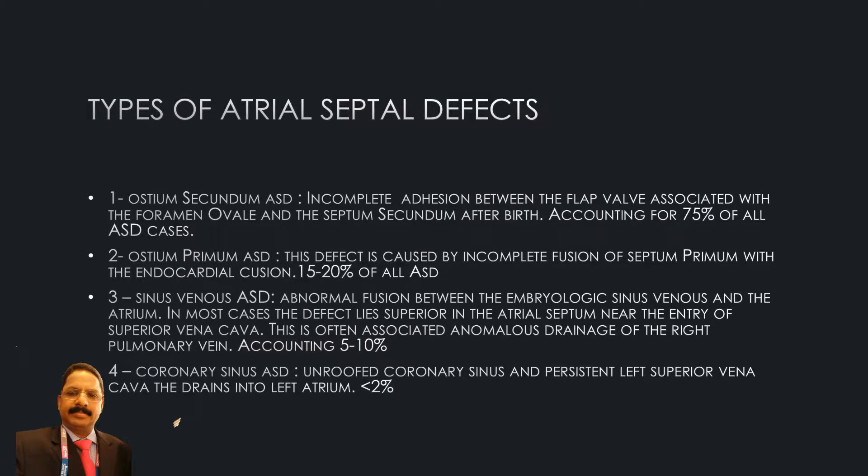There are four types of atrial septal defects. Number one: ostium secundum ASD, which is incomplete apposition between the flap valve associated with the foramen ovale and the septum secundum after birth. It accounts for 70 percent of all ASD cases.